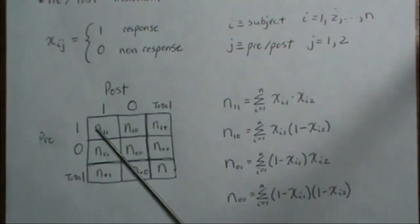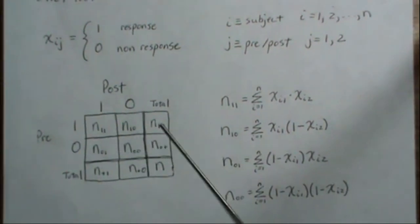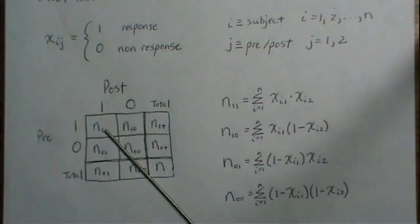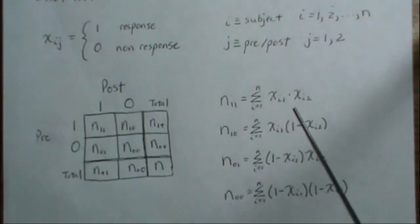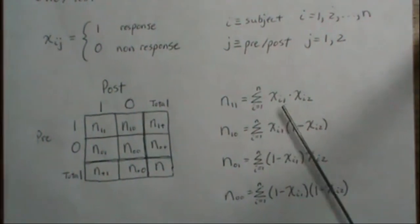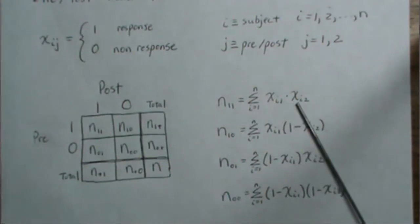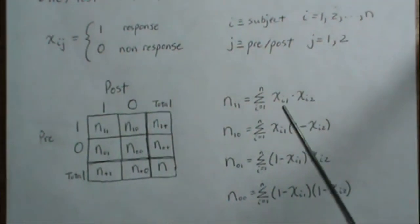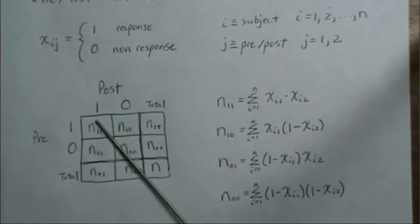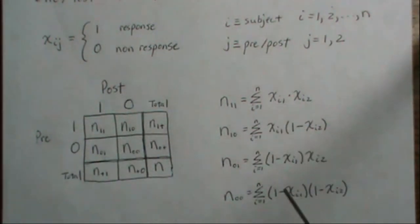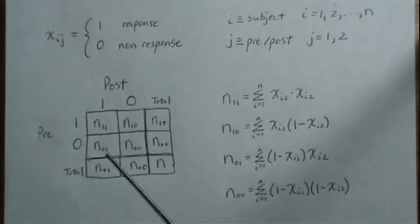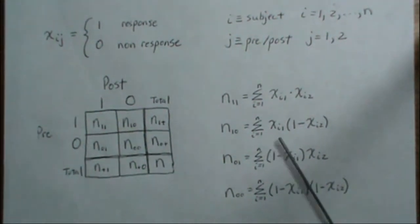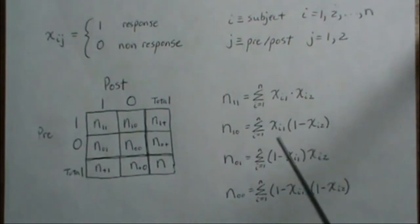N is the total sample size. The cell totals can be thought of as sums of the X_i,j values. Since they're either zero or one, when you sum them you get some ones — those are where both pre and post equal one, which lands in that cell. Each cell can be thought of as a sum, and that leads to the central limit theorem: when you're summing a bunch of values, it tends to a normal distribution.